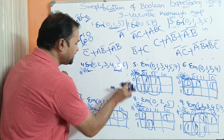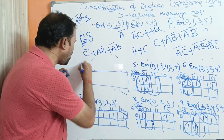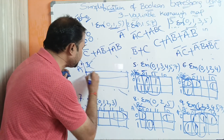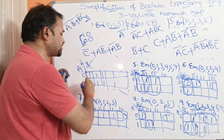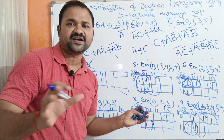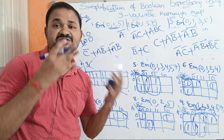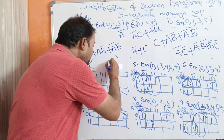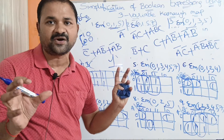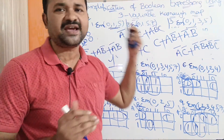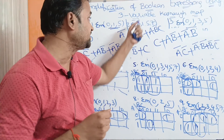Problem 10: ΣM(0, 1, 2, 3, 4, 5, 7) — covering nearly all values. When all 8 cells contain 1s, A changes from 0 to 1, and B and C also change from 0 to 1, so the result is simply 1. The simplified expression is 1.